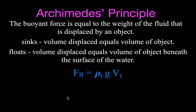This is the equation we use to calculate the buoyant force: the buoyant force is equal to the density of the fluid — because the buoyant force comes from the fluid — times g, times the volume of the fluid that is displaced. If the object sinks, the volume displaced is equal to the volume of the object. If the object floats, the volume displaced equals the volume of the object that is beneath the surface of the water.